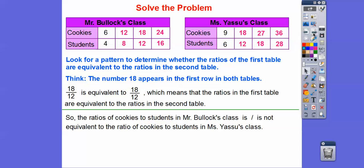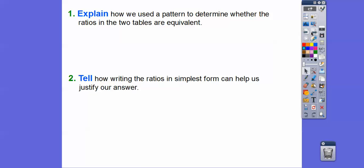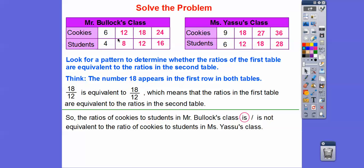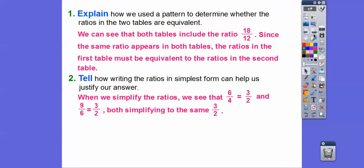So the ratio of cookies to students in Mr. Bullock's class is equivalent to the ratio in Mrs. Yasu's class — we'll circle 'is' right there. We can see that both tables included the ratio 18 to 12, and since the same ratio appeared in both tables, the ratios in the first table are equivalent to the ratios in the second table. We can also justify this by writing the ratios in simplest form: 6 over 4 divided by 2 gives 3 over 2, and 9 over 6 divided by 3 gives 3 over 2 as well. So both ratios simplify to 3 over 2, confirming they are equivalent.